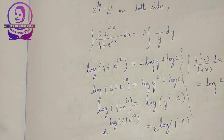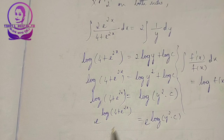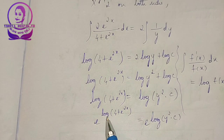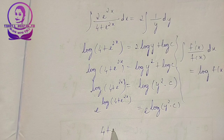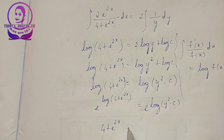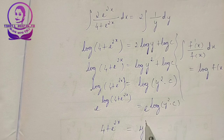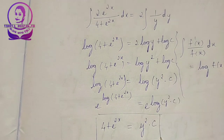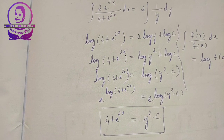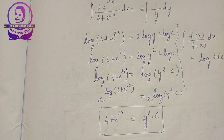Since e to the power of log of something gives back that something, this can be written as 4 plus e to the power of 2x is equal to y squared into c, which is our required solution of the differential equation. Thank you.